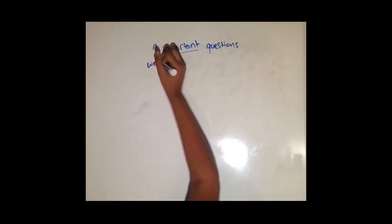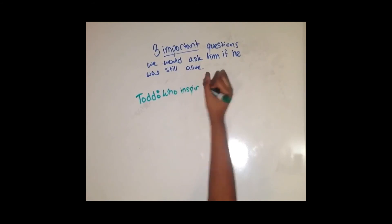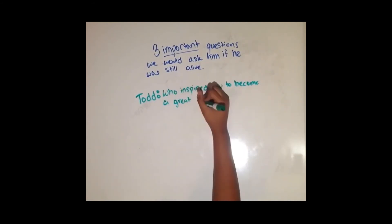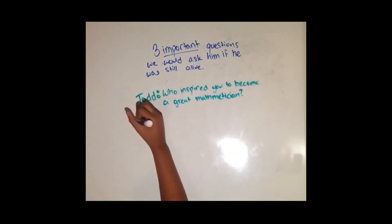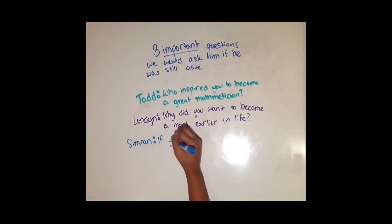Three questions that our group would like to ask him if he was still alive: From Todd, who inspired you to become a great mathematician? London's question was, why did he want to become a monk earlier in life? And my question was, if you weren't on house arrest all those years, what would he have done instead?